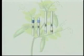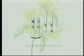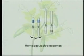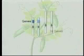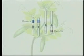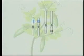A diploid cell has two matching sets of chromosomes. Matching pairs of chromosomes are called homologous chromosomes. Homologous chromosomes carry the same genes in the same locations. Since all diploid cells have homologous chromosomes, each cell carries two copies of each gene.